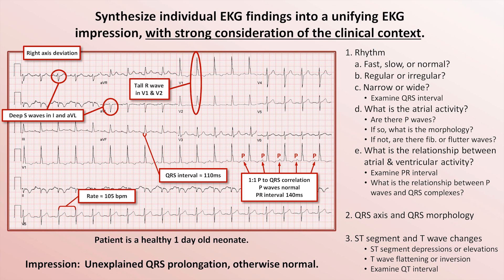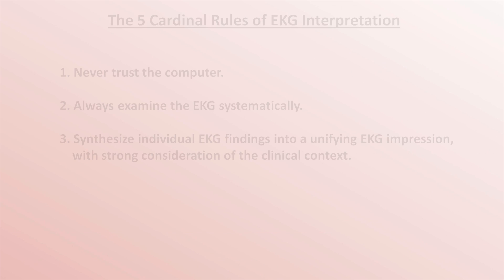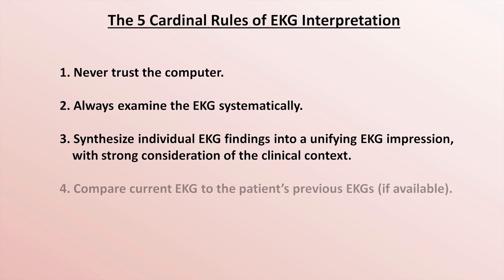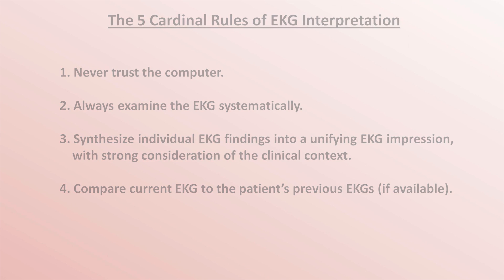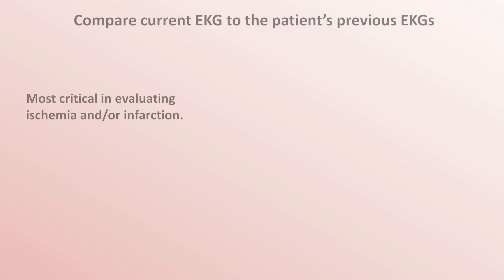The bottom line: consideration of clinical context is necessary to create an accurate impression. Rule number four: compare the current EKG to the patient's previous EKGs if they are available. There are plenty of circumstances in which this is important, but it is most critical in evaluating suspected ischemia and/or infarction. For example, suppose a patient presents to the ER with chest pain. Per US standard of care, an EKG gets completed within 5 minutes.